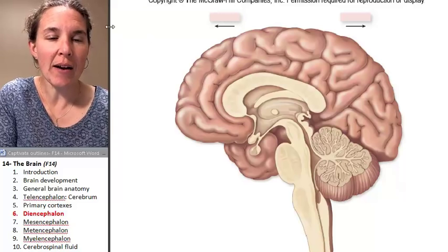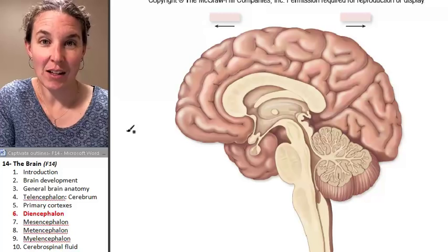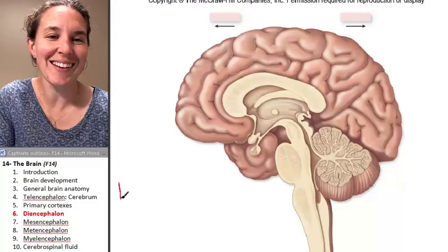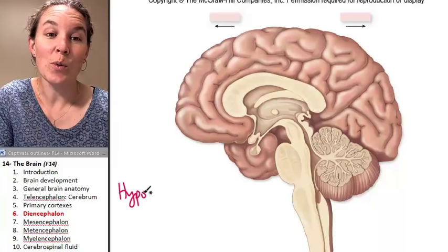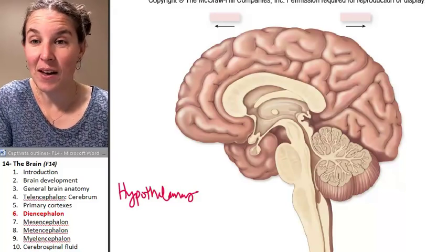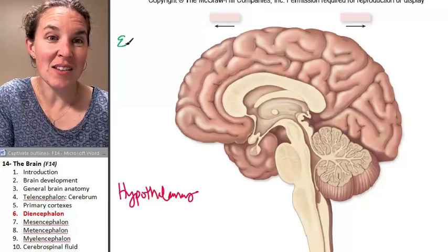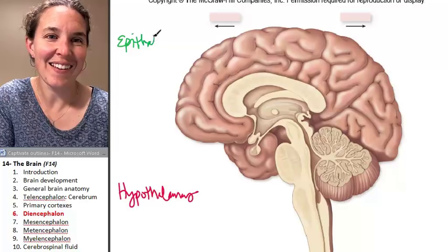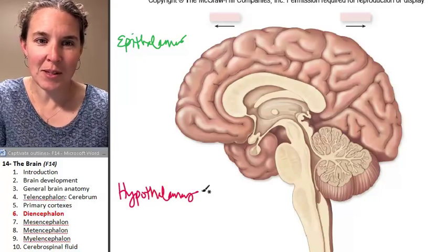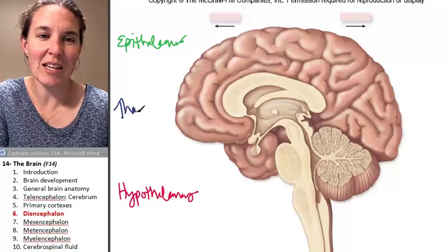First we have the epithalamus, except I don't want to use this fun color for the epithalamus. I'm going to use the fun color for the hypothalamus. Isn't that a fun color? The hypothalamus is one of them, the epithalamus is another. And what do you suppose? Epithalamus, hypothalamus, don't we need the thalamus? Yes.